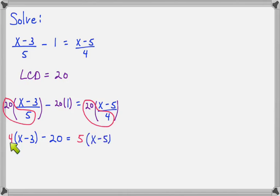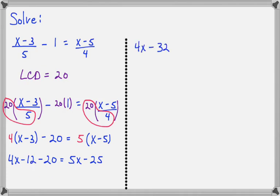So now we will distribute the 4 and distribute the 5. And before we start solving, let's combine our like terms. So I've got minus 12 and minus 20, which adds up to minus 32. And on the right side, nothing will combine. So that's 5x minus 25.